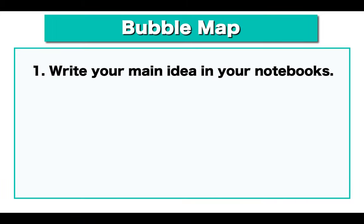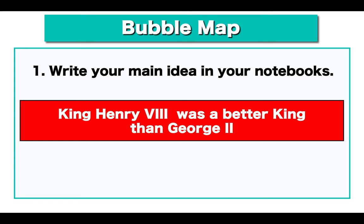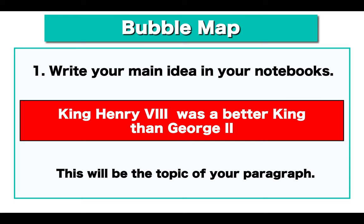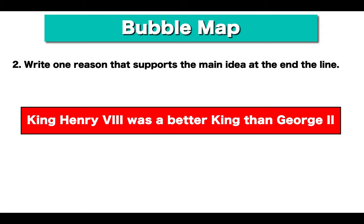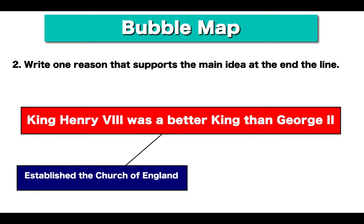So now, write your main idea in your notebooks. Here's an example: 'King Henry VIII was a better king than George II.' This is what I think — this is my main idea and will be the topic of your paragraph. So now we have to write one reason that supports the main idea at the end of the line. He established the Church of England.